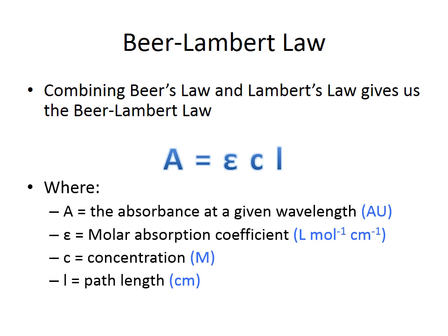Absorption does not have units and is normally represented as AU, meaning arbitrary units. The molar absorption coefficient has units of liters per mole per centimeter. Concentration must be given as a molarity, and the path length is in centimeters — but as previously defined, this is normally one due to the design of the cuvettes.